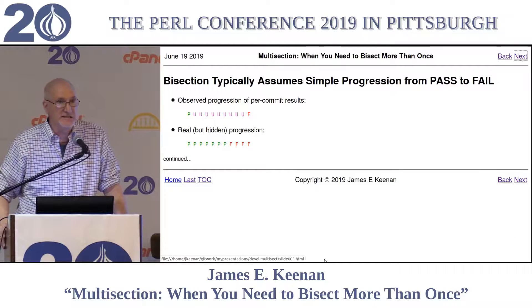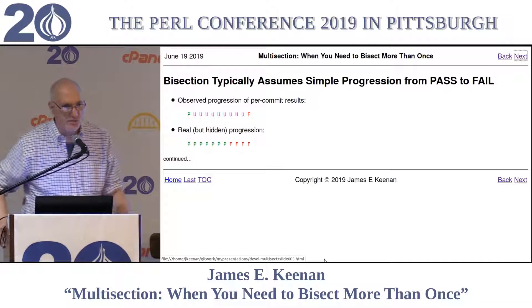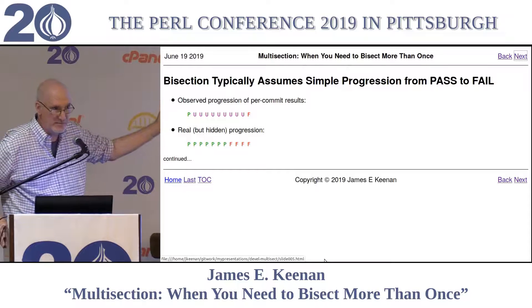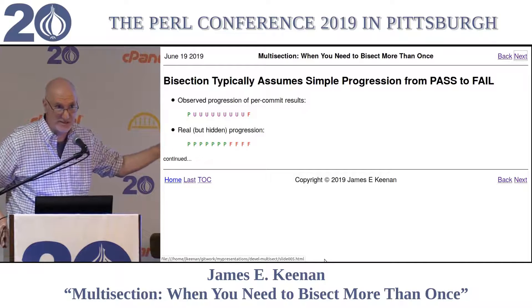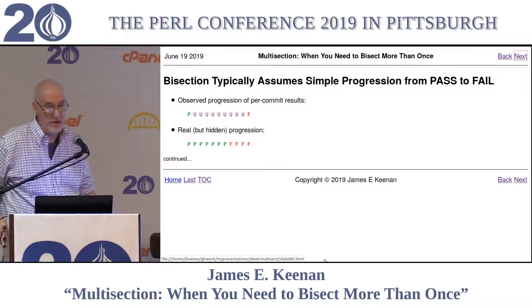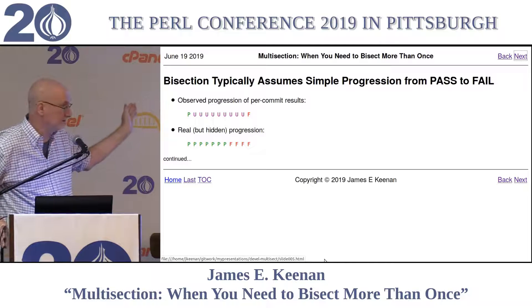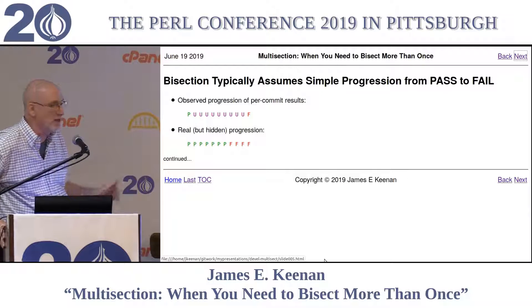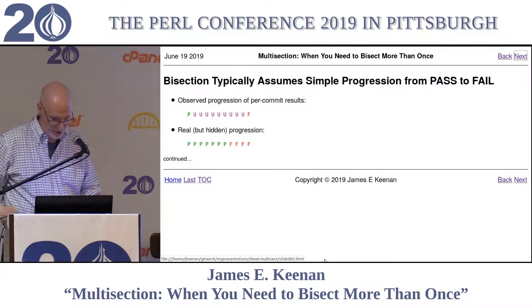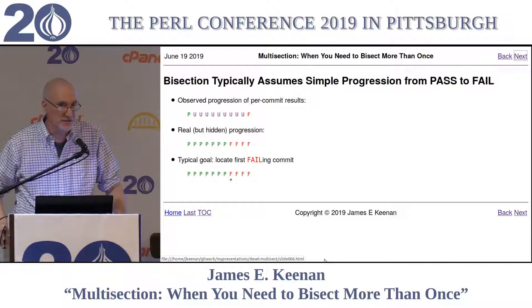Bisection typically assumes a simple progression from pass to fail. Suppose we began with a pass — the green P — and we had a series of commits whose status is unknown, and finally we come to another commit — F in red — where we know that there is a failure. We know a bug was introduced somewhere between P and F, but we don't know which one. Our typical goal is to locate the first failing commit.